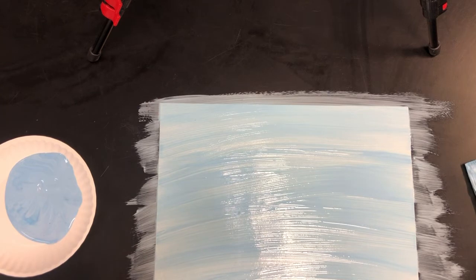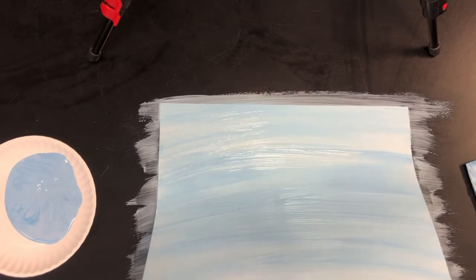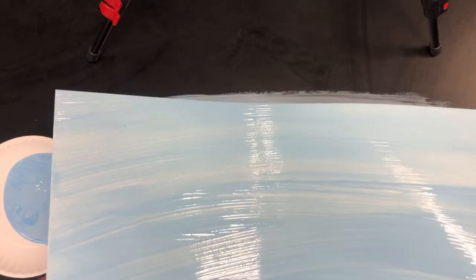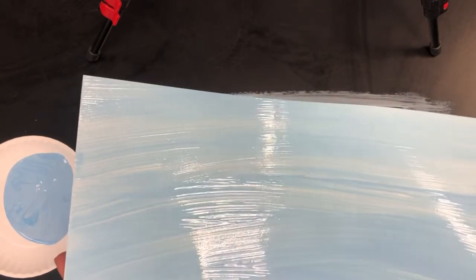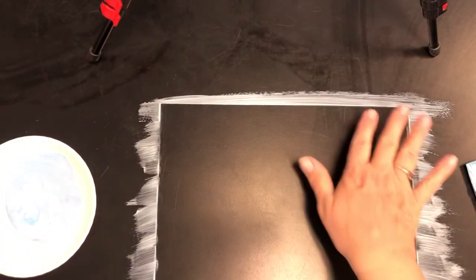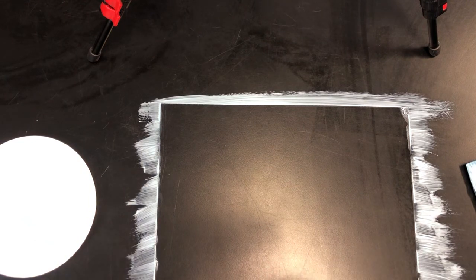And then once we're done with our painting, oh goodness, we're gonna carefully pick it up and we're gonna take it to the drying rack so that it can dry because next class we're gonna paint something on top of it. And then we're gonna get some Clorox wipes and get some paint off the table because it's gonna get a little messy. Alright, have fun guys.